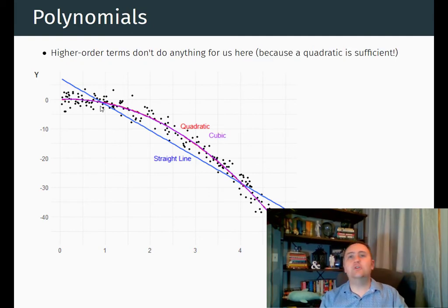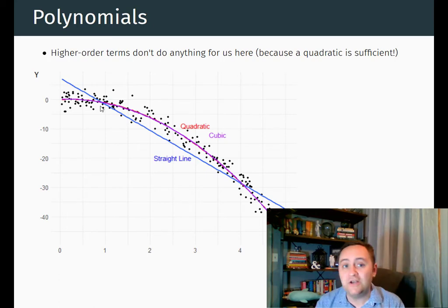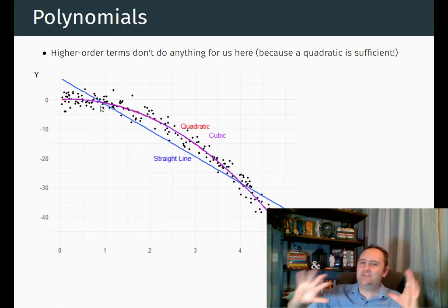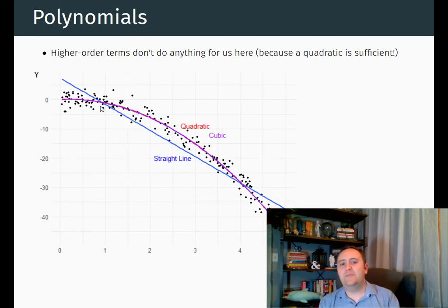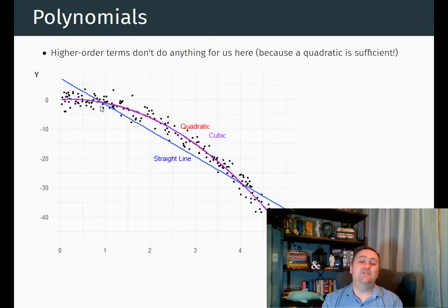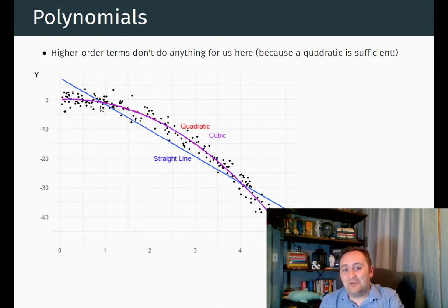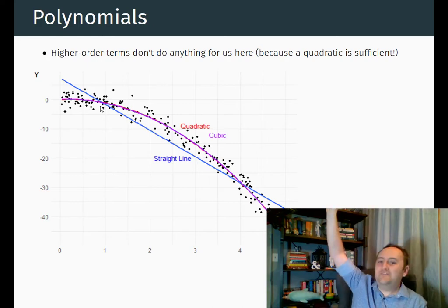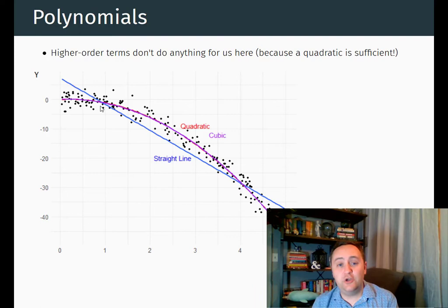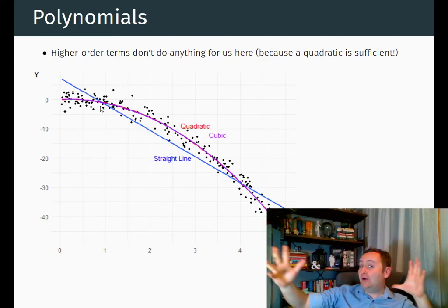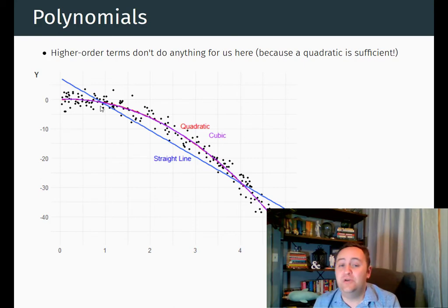We can add higher-order terms, but you want to be careful. As you add higher and higher order polynomials, you don't want to just add a whole bunch, because the more terms you add, the noisier the relationship can get, and you can get some really weird predictions. Also, if you go outside the range of the data, polynomials tend to get really wild and zoom off to infinity. So make sure that if you're using polynomial terms, you're really just looking at the data itself and not trying to predict outside of it.